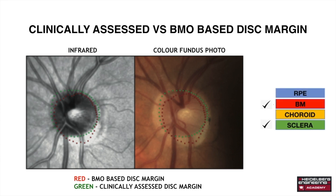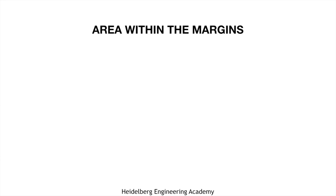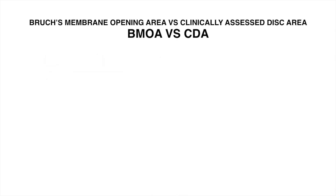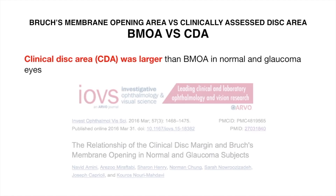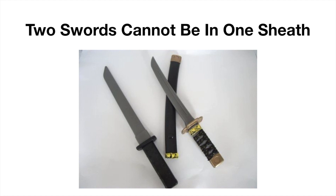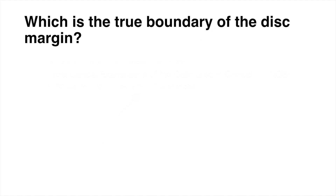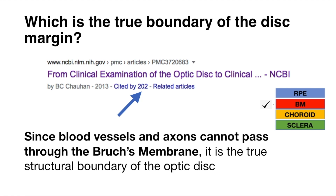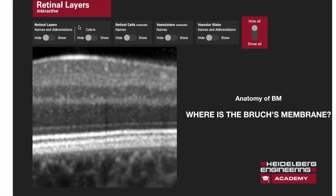When there are two disc margins, we will have two areas within the margins: one clinical disc area, and two, Bruch's membrane opening area. It is well documented by Amini et al. that clinical disc area is way larger than the Bruch's membrane opening area in normal as well as glaucomatous eyes. Since blood vessels and axons cannot pass through the Bruch's membrane, termination of it is the true boundary, putting all speculations to rest.